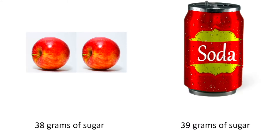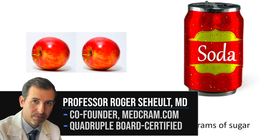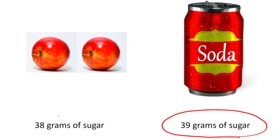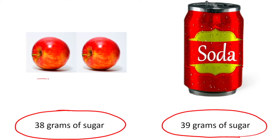Welcome to another MedCram video. We're going to talk today about the low-carb fruit fallacy. That fallacy states that 39 grams of sugar in this soda is the same and has the same effect as a similar amount of sugar in a whole fruit product. People will say fructose is fructose, sugar is sugar, it doesn't matter how it's packaged — the liver's got to still deal with that sugar in the same way. Looking at data, that is just not the case, and it's a fallacy.